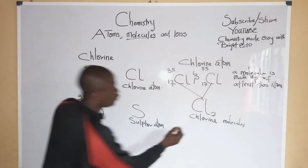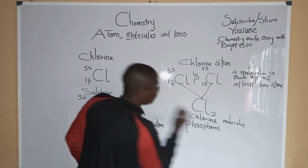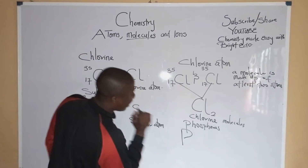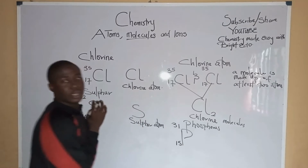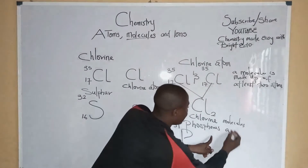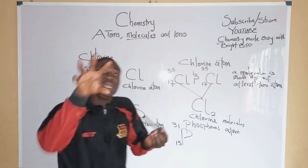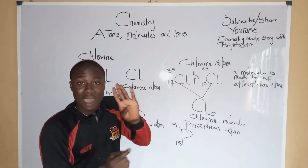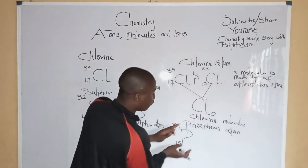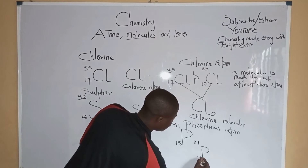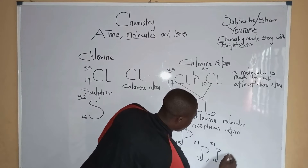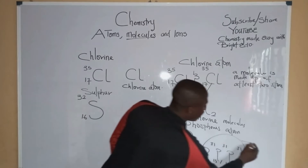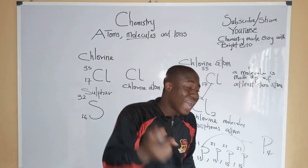For another example, we are given another element like phosphorus. The symbol for phosphorus is P, and this is an atom of phosphorus — phosphorus atom. Now, what is the molecule form of phosphorus? Phosphorus molecule is made up of four atoms of phosphorus. So if we want to form phosphorus molecule, we get P4, which is basically white phosphorus.